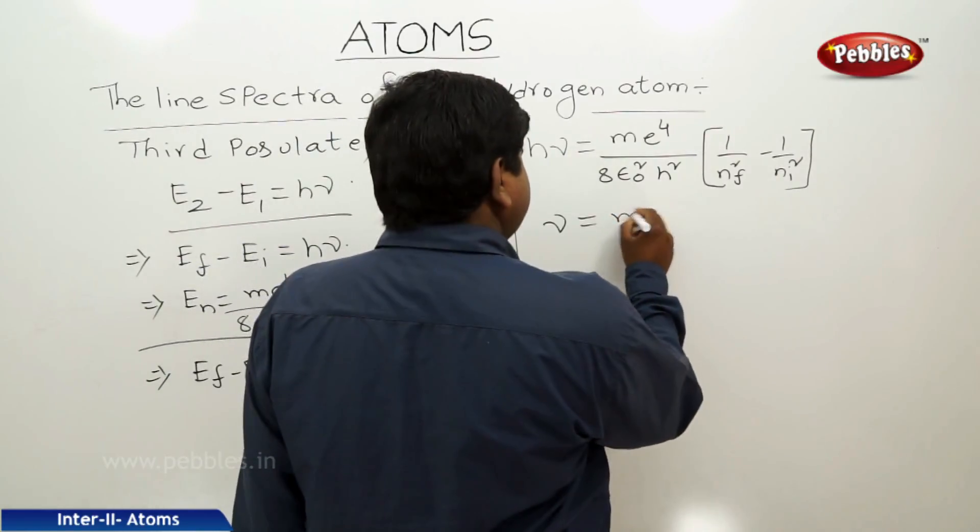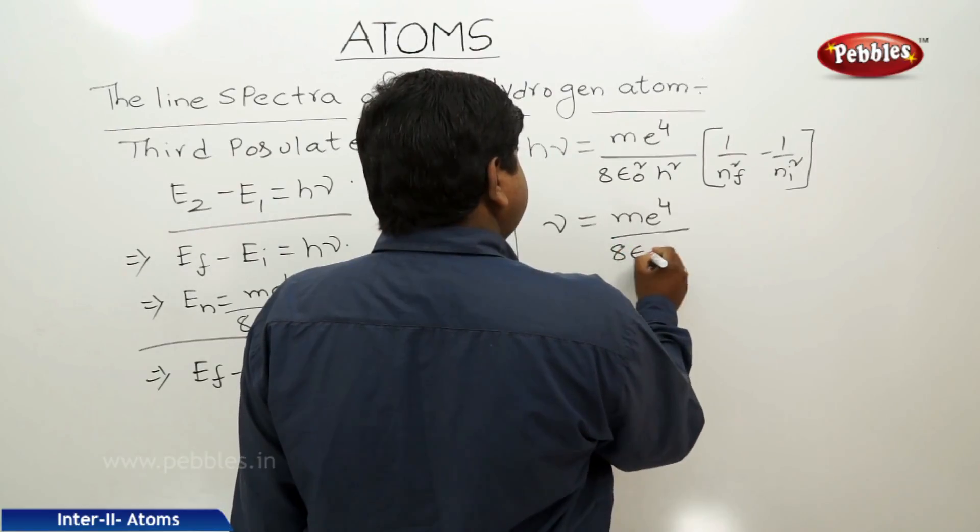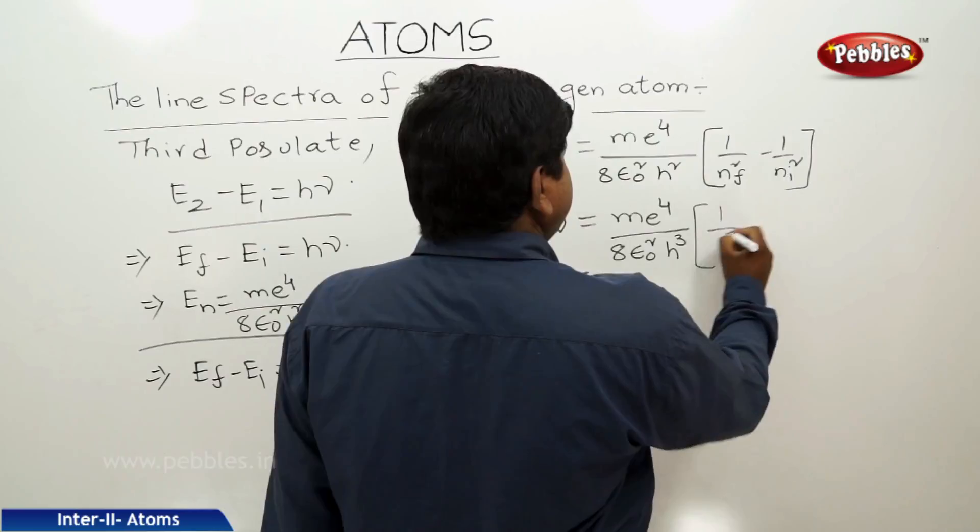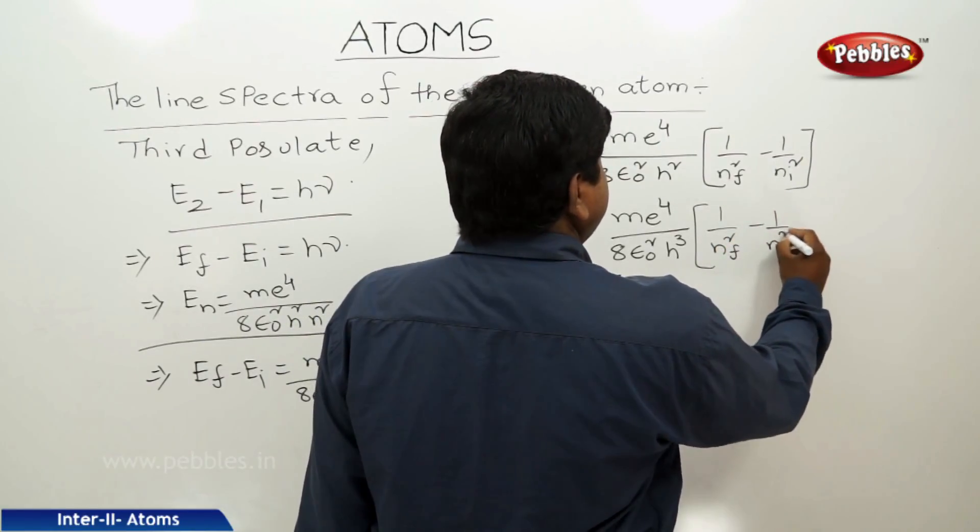We can say that nu equals m e⁴ by 8 epsilon naught squared h cubed into 1 by nf squared minus 1 by ni squared.